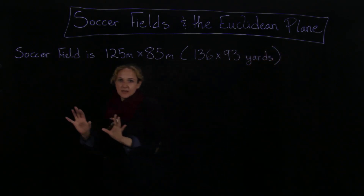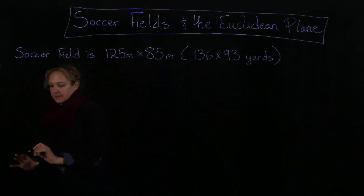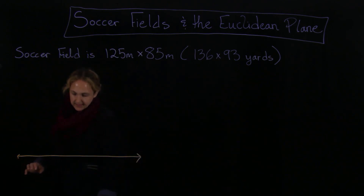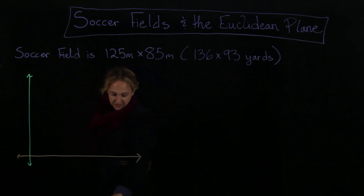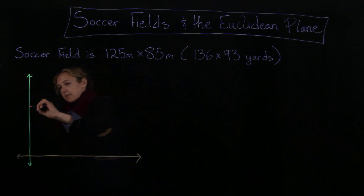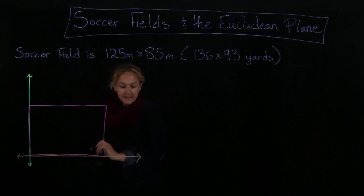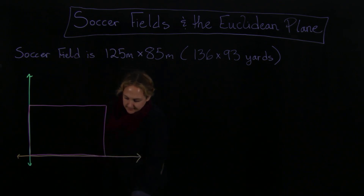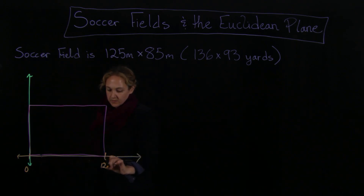So what can that tell me in terms of how I'm going to look at the field? If I have my coordinates here, I can have one axis like this and one axis like this, and then your pitch can sit right inside of here. You can imagine it almost as sitting right inside of the plane. So if it's going to sit like this, then my 125 meters are going to go from zero to 125.